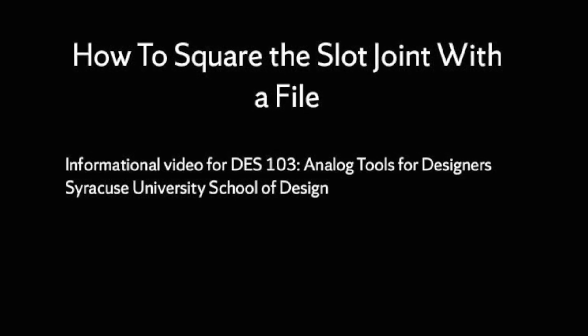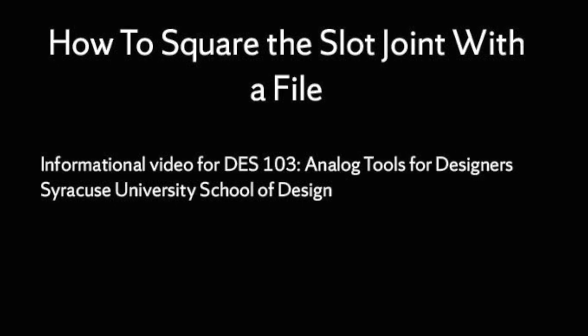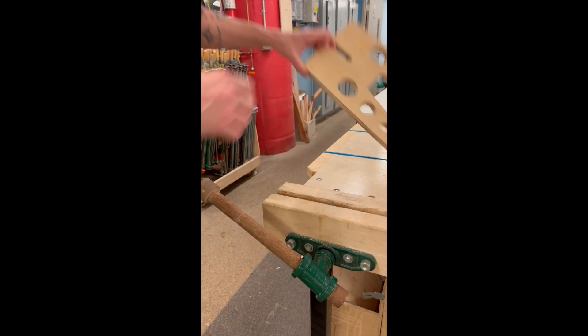This video will show you how to use a file to square the slot joint in your legs. Go into the tool cage and get a rectangular file.